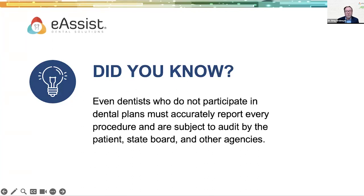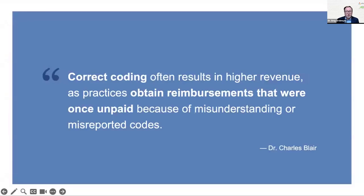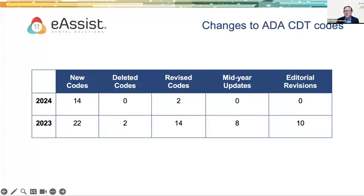As my friend Dr. Charles Blair put it: correct coding often results in higher revenue, as practices obtain reimbursements that were once unpaid because of misunderstood or misreported codes. The golden rule of coding is always to code for what you do — don't change it to something more aggressive for a higher reimbursement. Code for what you do, but make sure you have good narratives and supporting documentation to go along with it.